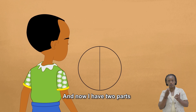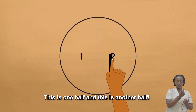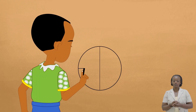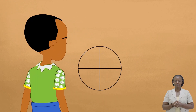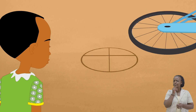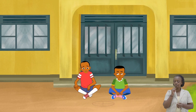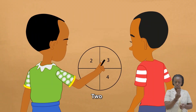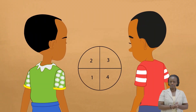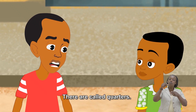And now I have two parts. This is one half and this is another half. One, two, three, four. Four parts.